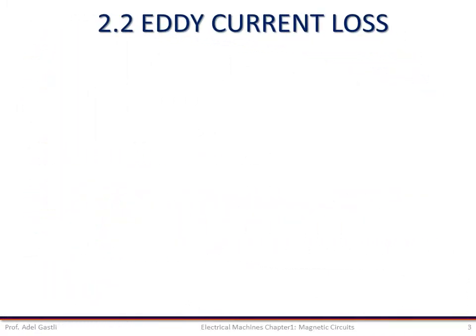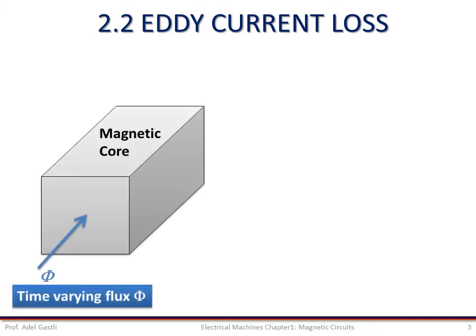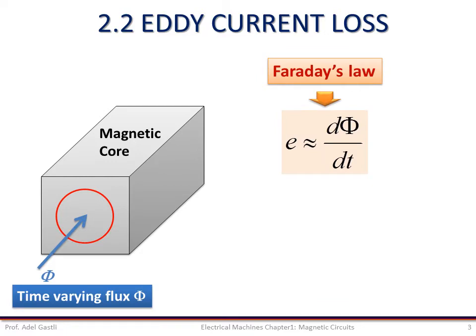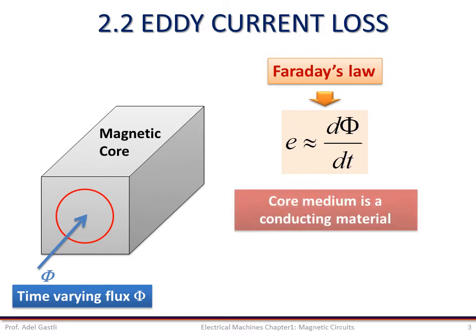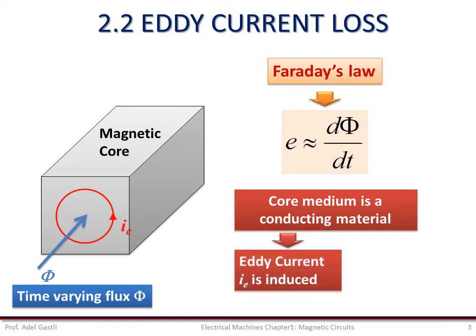In the previous part 3 we have seen the hysteresis loss in a magnetic core. Another power loss occurs in a magnetic core when the flux density changes rapidly in the core. The cross section of a core through which the flux density B is rapidly changing is shown in this figure. Consider a circular path in this cross section. According to Faraday's law, a voltage E will be induced in the path because of the time variation of flux enclosed by this path. Since the core medium is usually a conducting material because it contains steel, a current IE known as eddy current will flow around this circular path. This induced current depends on the rate of variation of the flux and the resistivity of the magnetic core material.